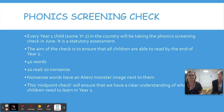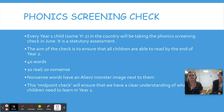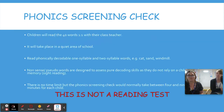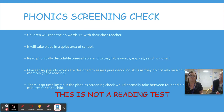The screening check is taken by every Year One child in the country in June. There are 40 words to read — 20 real words and 20 nonsense words — just to check blending skills. It's done one-to-one with the class teacher, with no time limit, though it usually takes between four and ten minutes per child.